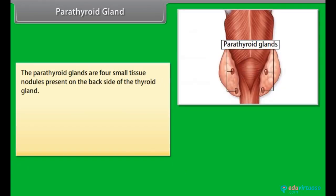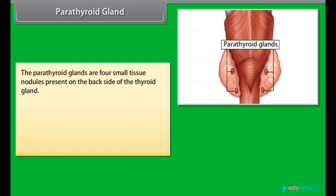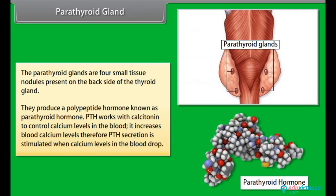The parathyroid glands are four small tissue nodules present on the backside of the thyroid gland. They produce a polypeptide hormone known as parathyroid hormone (PTH). PTH works with calcitonin to control calcium levels in the blood; it increases blood calcium level. Therefore, PTH secretion is stimulated when calcium levels in the blood drop.